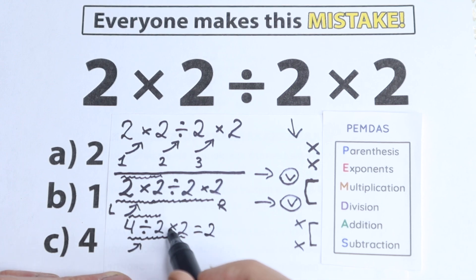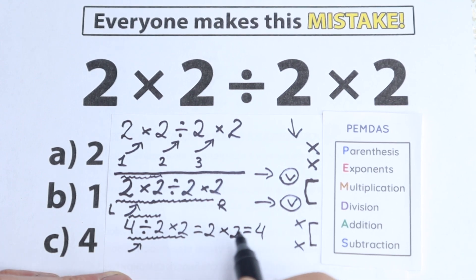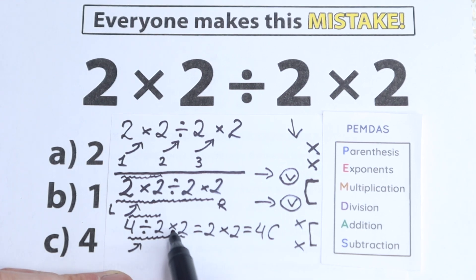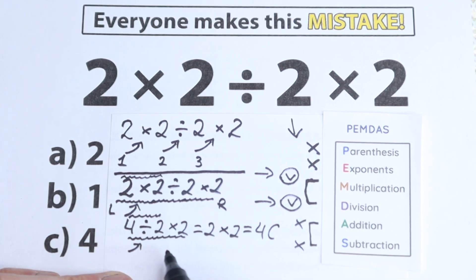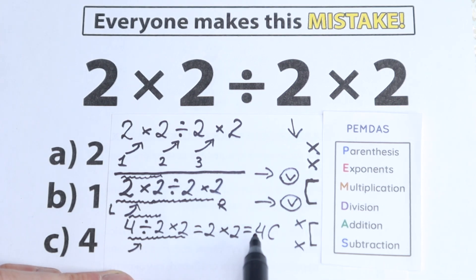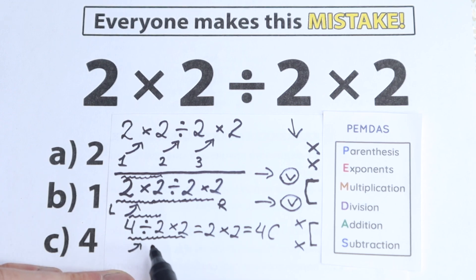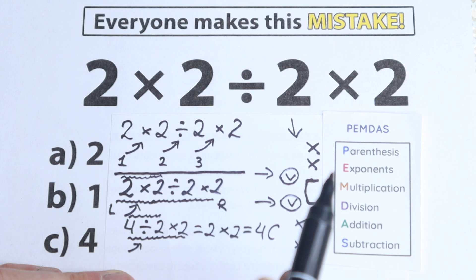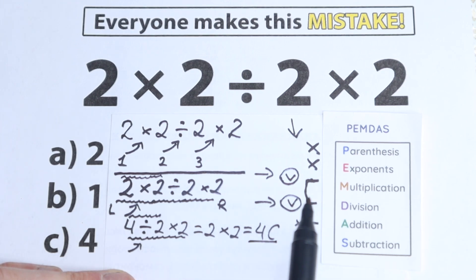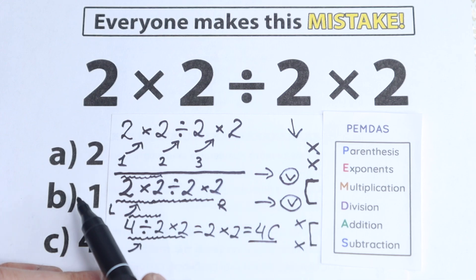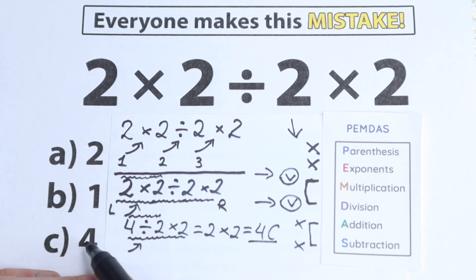I know there's a lot of discussion about whether to do multiplication or division first, but this depends on which order of operation you follow. According to PEMDAS, the answer is 4. If you solve it according to BODMAS, you might get 1. It depends on your country and what order of operation is used there. According to PEMDAS, the correct answer is option C — which is 4.